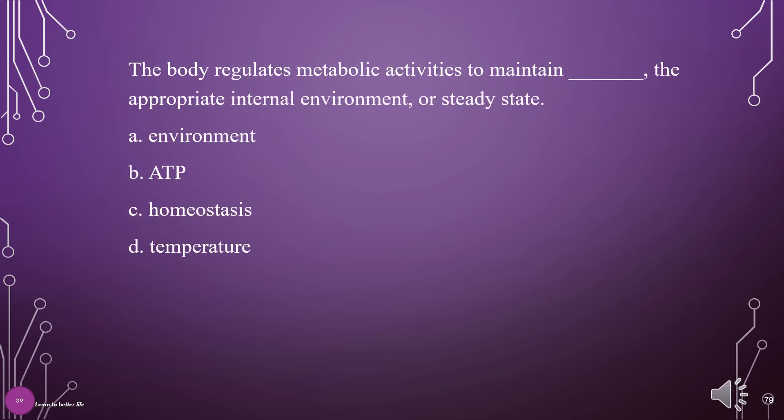The body regulates metabolic activities to maintain what — the appropriate internal environment, or steady state? A. Environment, B. ATP, C. Homeostasis, D. Temperature. The answer is C: Homeostasis.